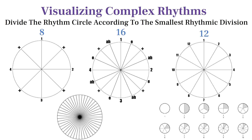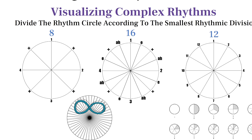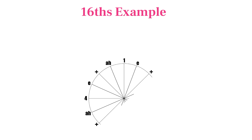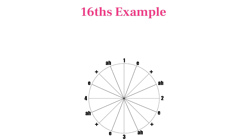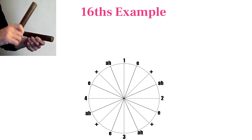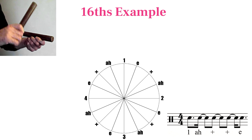A rhythm circle could potentially be divided into infinitely many pieces. Let's use sixteenth note divisions on our rhythm circle to visualize the common clave rhythm that we hear in genres from bossa nova to hip-hop. Let's mark the pieces on beats one, and, and, e.